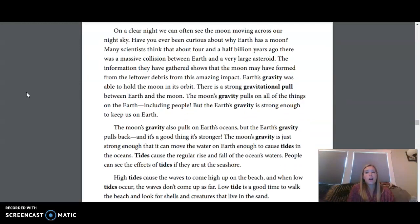On a clear night, we can often see the Moon moving across our night sky. Have you ever been curious about why Earth has a Moon? Many scientists think that about four and a half billion years ago, there was a massive collision between Earth and a very large asteroid. The information they have gathered shows that the Moon may have formed from the leftover debris from this amazing impact. Earth's gravity was able to hold the Moon in its orbit.